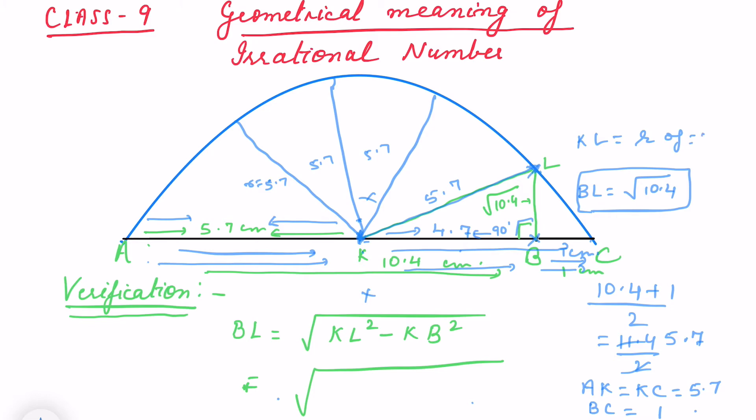So KL is 5.7. So if you take this right angle triangle KLB, where B is 90 degrees, this is hypotenuse of the triangle, this one is base, and this one is perpendicular. We want to find out perpendicular.